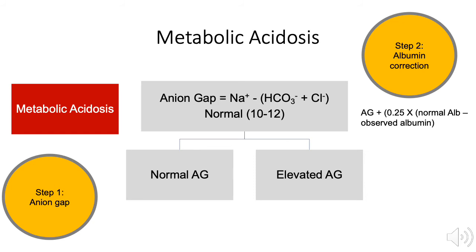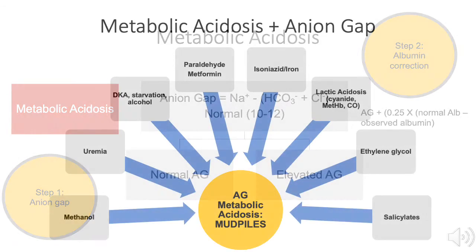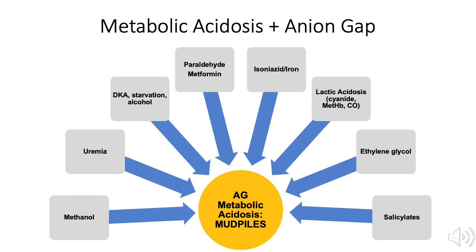Determining whether the anion gap is elevated is key to identifying the most likely cause of the metabolic acidosis. Disorders that lead to metabolic acidosis and an elevated anion gap can be remembered using the mnemonic MUDPILES: methanol, uremia, diabetic ketoacidosis, paraldehyde, isoniazid, lactic acidosis, ethylene glycol, and salicylates. Knowing the most likely cause of an anion gap metabolic acidosis can help providers correct the underlying disorder and resolve the acid-base derangement.